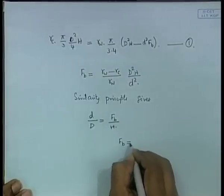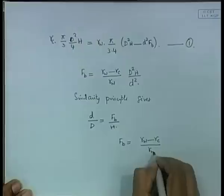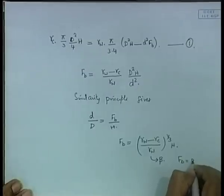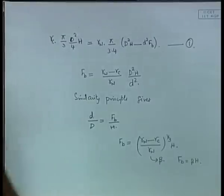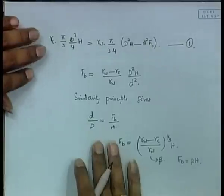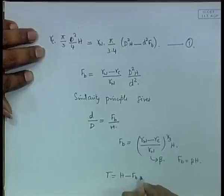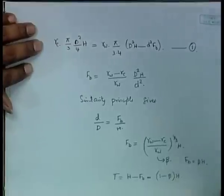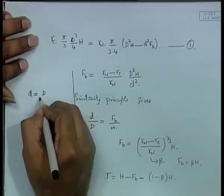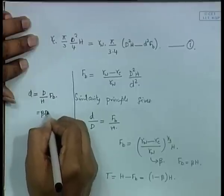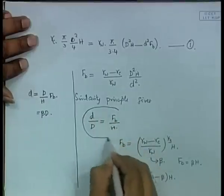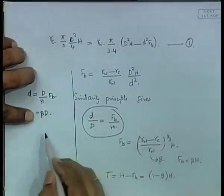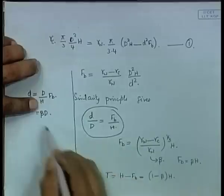Combining these two equations you get FB equals ((gamma_w minus gamma_c)/gamma_w)^(1/3) times H, and we can write this as beta, so FB equals beta × H. Therefore T equals H minus FB equals (1 minus beta) times H. The diameter of the waterplane section from the similarity principle is d equals D times (FB/H), and since FB/H equals beta, we get d equals beta × D.